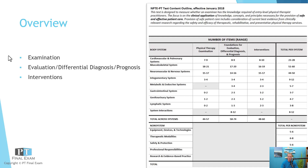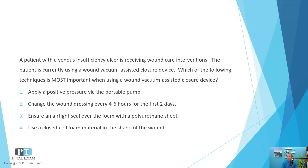So today let's talk about the integumentary system. There are somewhere between nine and twelve questions related to the integumentary system. We'll go ahead and talk about the interventions portion of that. For those watching the YouTube version, I post the question so you can see it. It's also important to recognize that in the integ system, we have examination, differential diagnosis, and intervention. Here's your practice question: A patient with a venous insufficiency ulcer is receiving wound care interventions. The patient is currently using a wound vacuum-assisted closure device. Which of the following techniques is most important when using a wound vacuum-assisted closure device?